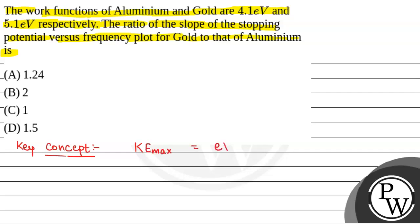as e into Vs, where Vs is the stopping potential. From the photoelectric equation, hf, that is energy incident, is equal to work function phi plus KE max.